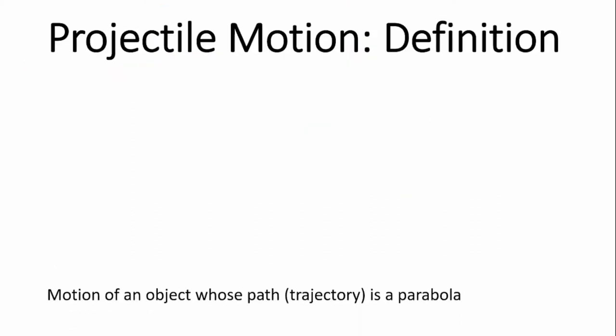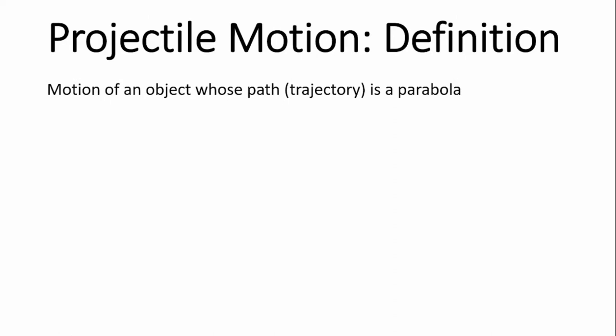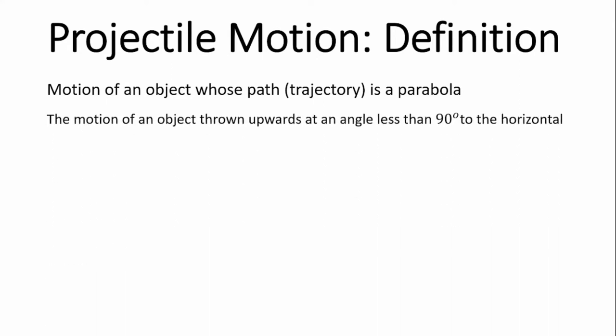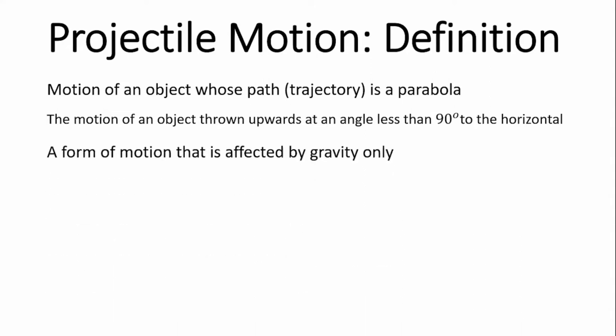We're going to start by giving some definitions of projectile motion. First, it's the motion of an object whose path — or what we call trajectory — is a parabola. That is, when the motion of an object forms a parabolic path, it is projectile motion. Also, it's the motion of an object thrown upwards such that the angle with which it's thrown is less than 90 degrees to the horizontal.